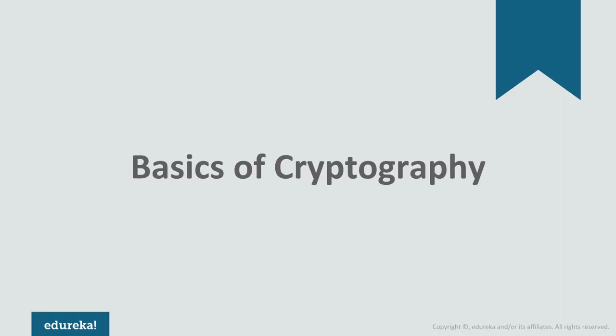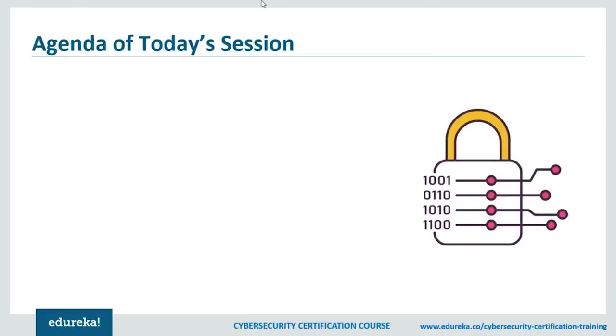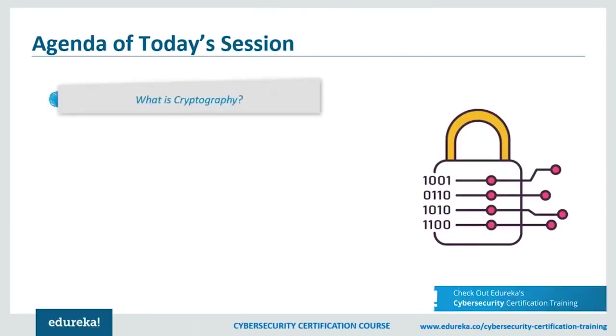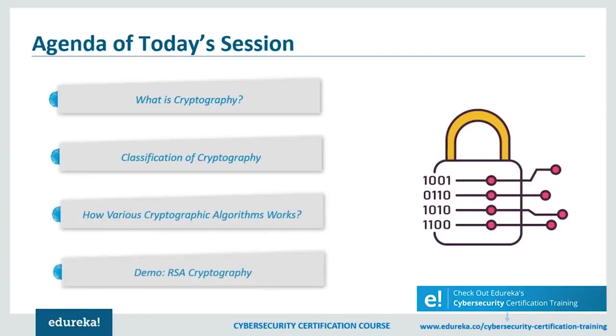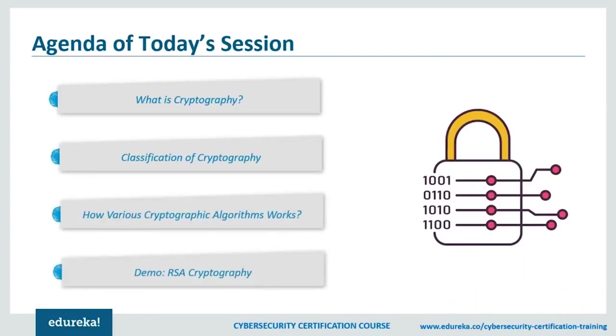Cryptography is essentially important because it allows you to securely protect data you don't want anyone else to access — used to protect corporate secrets, classified information, and personal information against identity theft. We'll cover what cryptography is through a simplistic scenario, the classifications of cryptography and how different algorithms work, and then a demo of the popular RSA algorithm.